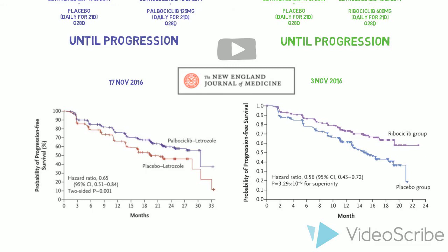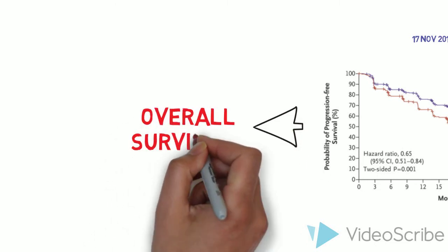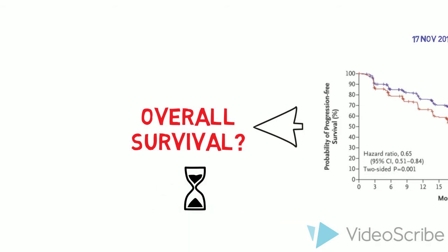No head-to-head trials of the two drugs have been performed. Overall survival was a secondary outcome in both trials. However, as most of these patients will proceed to standard chemotherapy after disease progression and there are multiple lines of chemotherapy for breast cancer, survival improvements are unlikely to be seen for a number of years.